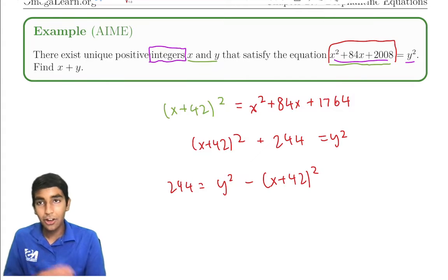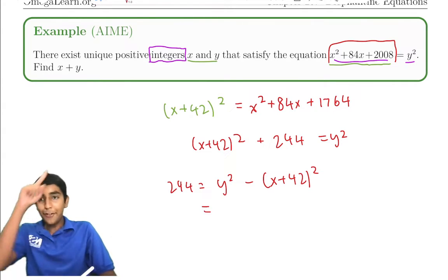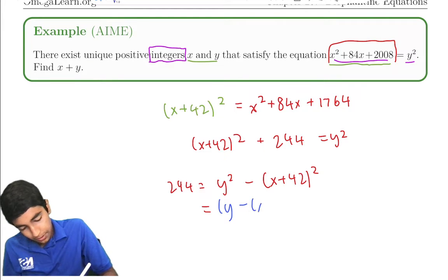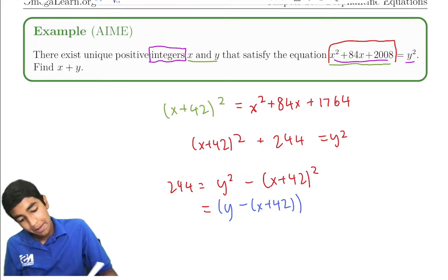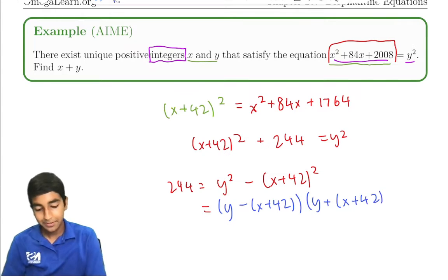So y² - (x + 42)² = 244. Now let's take a look at what this right side is. This right side, difference of squares, factorizations. That's (y - (x + 42)) times (y + (x + 42)).